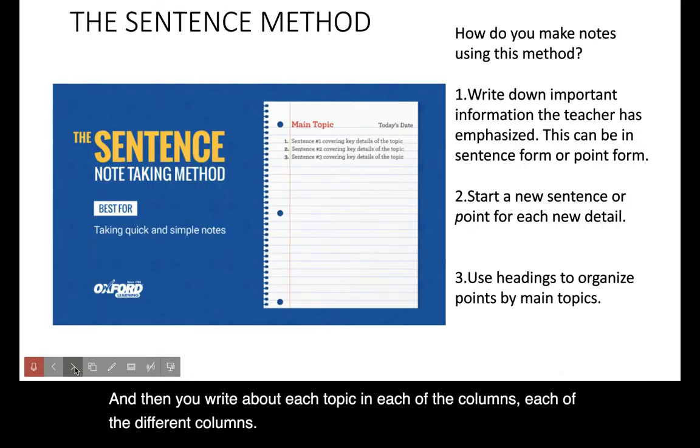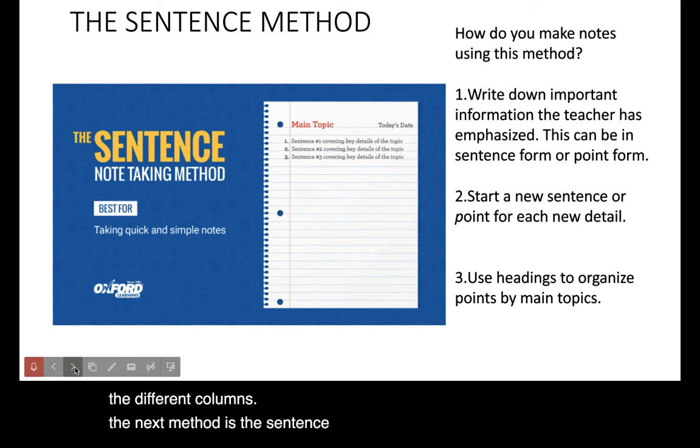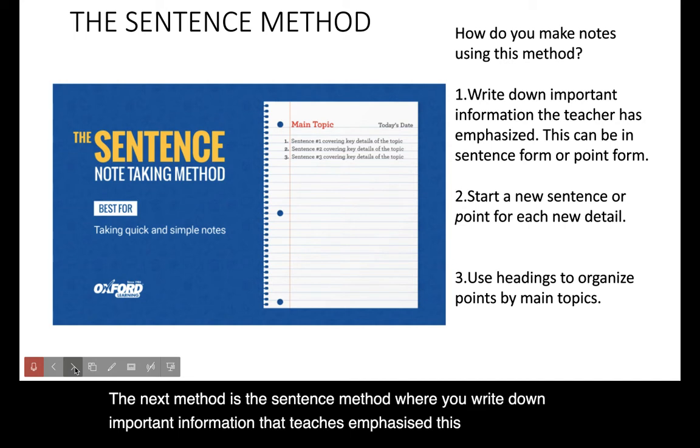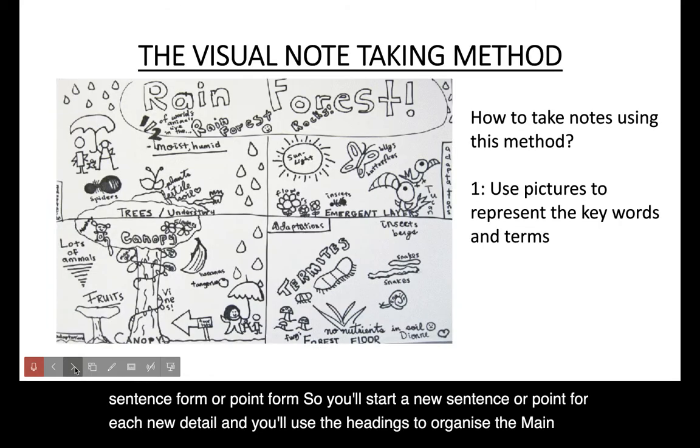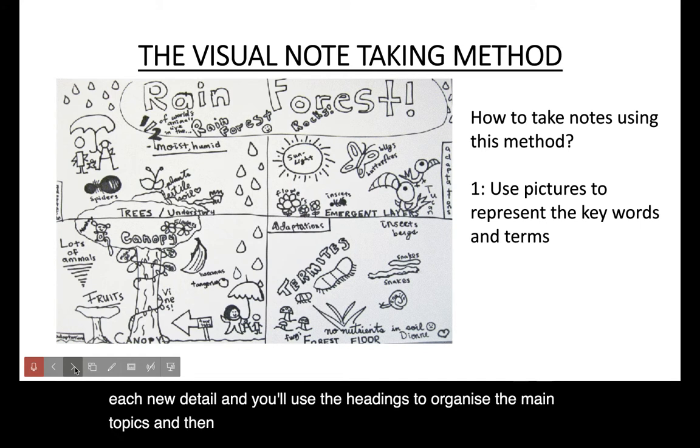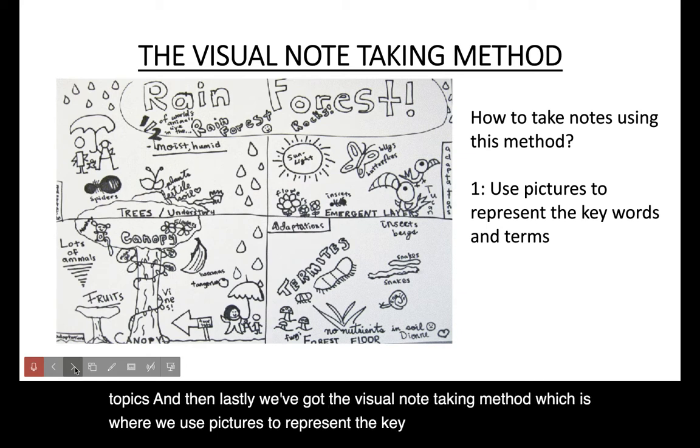The next method is the sentence method where you write down important information that teachers emphasize. This can be done in sentence form or point form, so you'll start a new sentence or point for each new detail and you'll use the headings to organize the main topics. And then lastly we've got the visual note-taking method which is where we use pictures to represent the key terms and words that we are learning about.